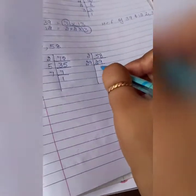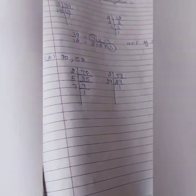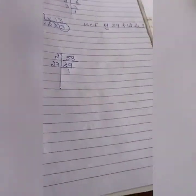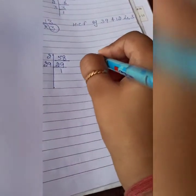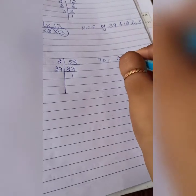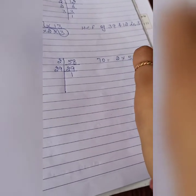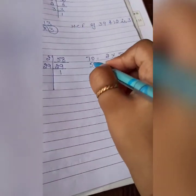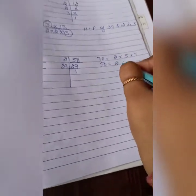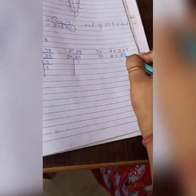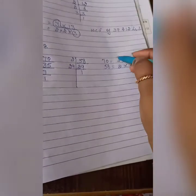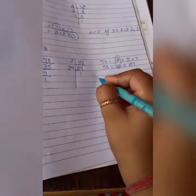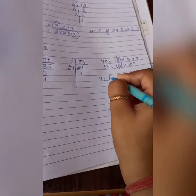29 is our prime number. 29 divided by 29. Now 70 equals to 2, 5, 7 and 58 equals to 2 multiplied 29. Common is 2, so HCF of 70 and 58 is 2.